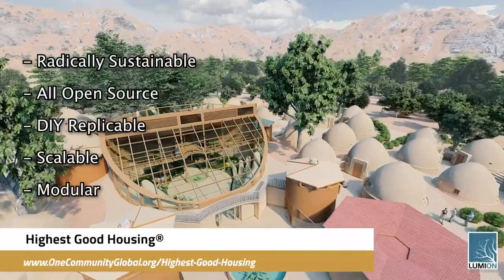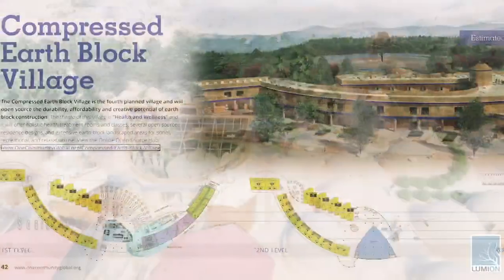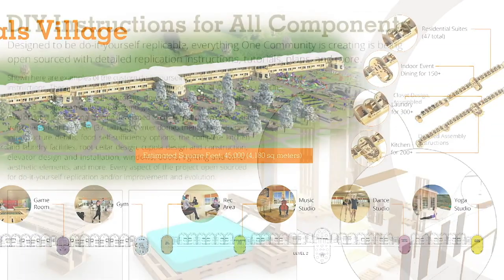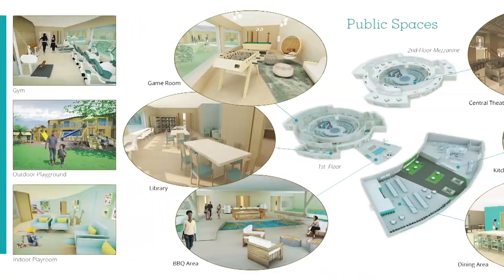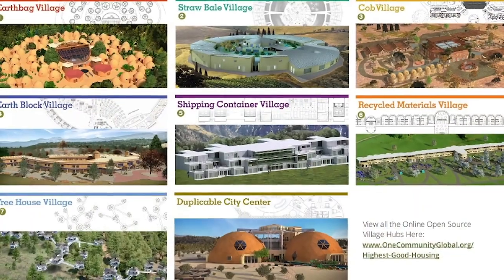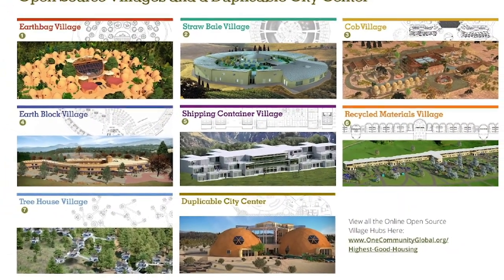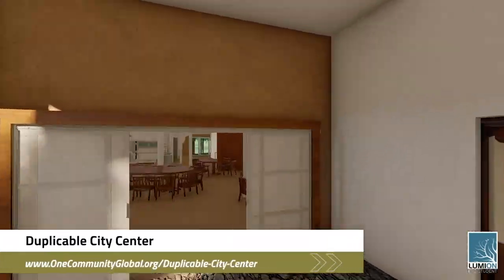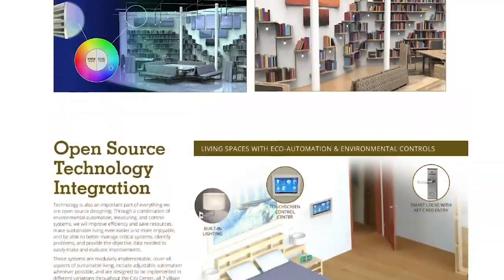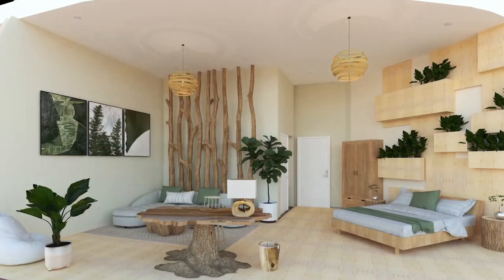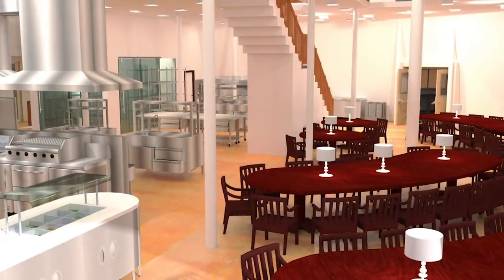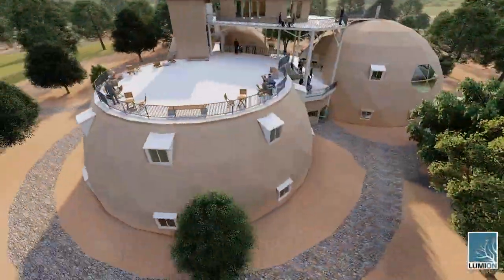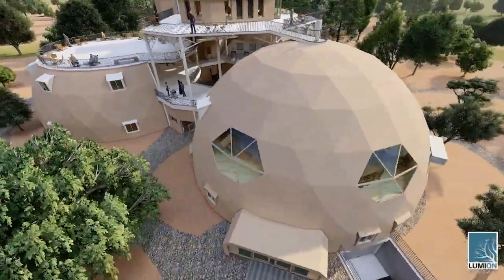The One Community approach to highest good housing is eco-artistic home building that is affordable, sustainable, do-it-yourself duplicable, resource and space efficient, and consists of seven different sustainably constructed village models. One Community is also creating an open-source duplicable city center designed to be LEED Platinum certified, provide 12 guest rooms, dining for over 150 people, and laundry and recreation space for over 300 people, all while saving money, time, space, and resources.